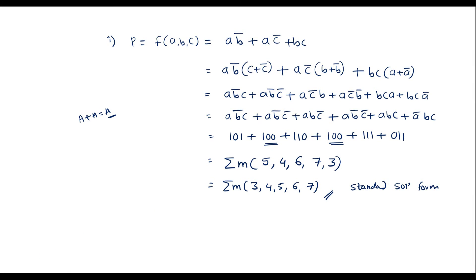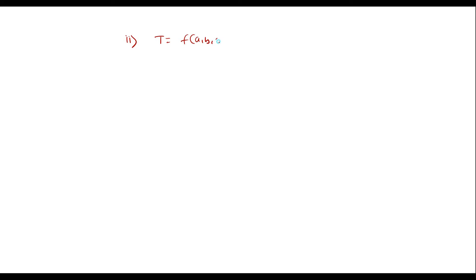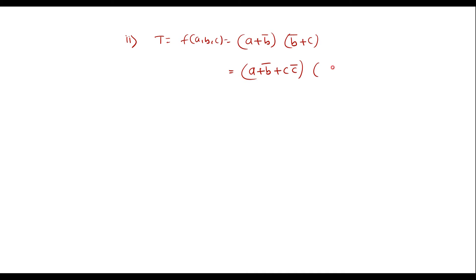Now let me consider the second function T = (A + B̄)(B̄ + C). This is in POS form. We have to convert it to proper standard POS. In standard POS, each sum term must consist of all variables. In the first term (A + B̄), variable C is missing. I should add it as (A + B̄ + CC̄), because CC̄ equals zero, keeping the expression equivalent. Similarly, in (B̄ + C), variable A is missing, so I write (B̄ + C + AĀ).